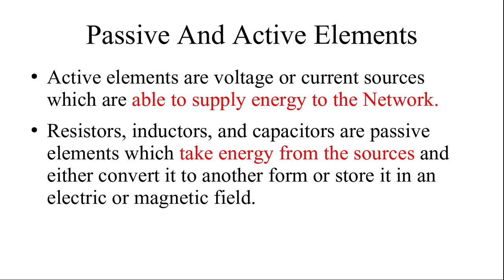In circuit analysis we should know what is an active element and what is a passive element. This is a very basic term. Active element has the meaning of active — it is to activate or to do some act. The element or component which is giving or supplying energy to the network is called an active element, or in other words, which is activating the network or circuit is an active element.